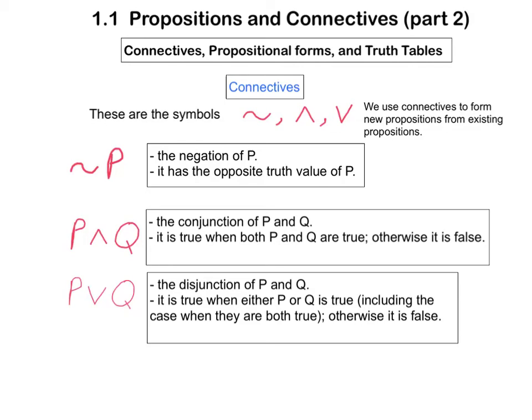This is part two of our series of videos on section 1.1. In this one, we discuss connectives, propositional forms, and truth tables.